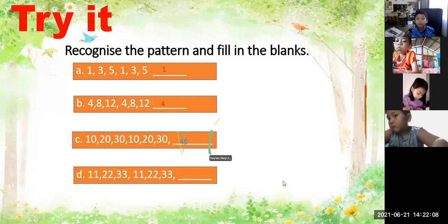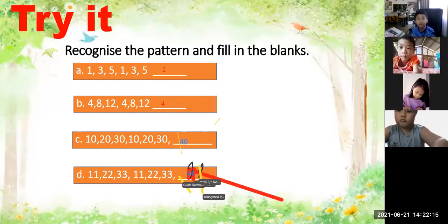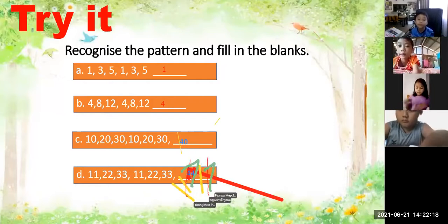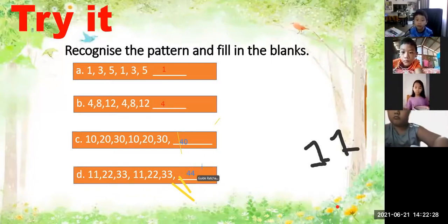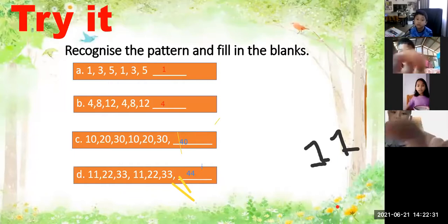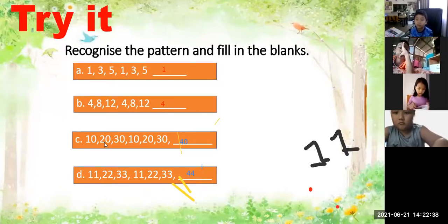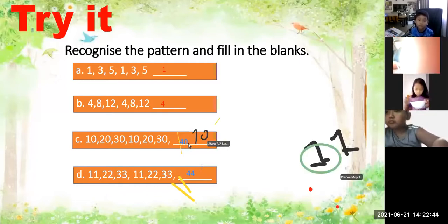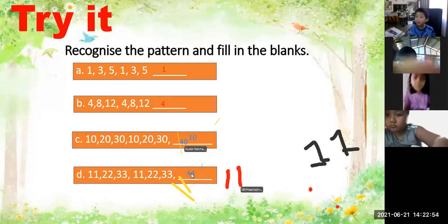Letter D: 11, 22, 33 — 11, 22, 33. The next number is 11. Very good, 11. That is repeated patterns. For example: 1, 3, 5 — 1, 3, 5 — next is 1. And 4, 8, 12 — 4, 8, 12 — next is 4. For 10, 20, 30 — 10, 20, 30 — if you write 40 it is wrong. The correct answer is 10. For 11, 22, 33 — 11, 22, 33 — if you write 44 it is wrong. It should be 11.